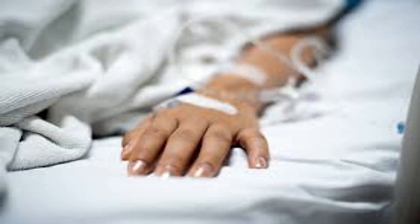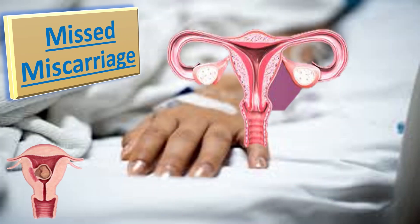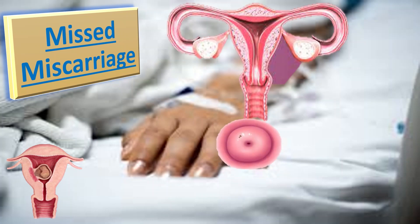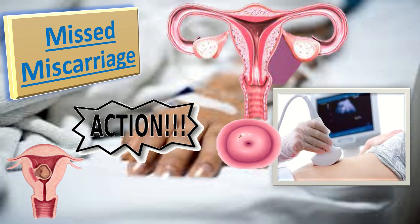Next comes the missed miscarriage. The patient may be asymptomatic, and this may be an incidental finding. Pain and bleeding may or may not be present, and on per speculum examination the os is closed. On ultrasound, the gestational sac should be 25 mm or more with no fetal pole, or the fetal pole should be 7 mm or more with no cardiac activity. Management involves explaining the diagnosis and the options of expectant, medical, or surgical management.